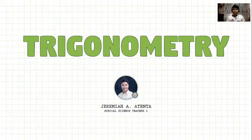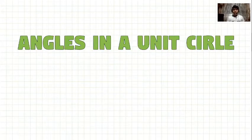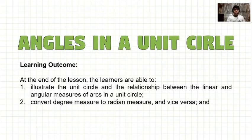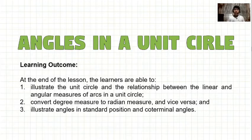Hello everyone. In this lesson, we will discuss the first topic under trigonometry, and that is angles in a unit circle. We will illustrate the unit circle and the relationship between the linear and angular measures of arcs in a unit circle. Next, we will convert degree measure to radian measure and vice versa. And lastly, we will illustrate angles in standard position and coterminal angles.